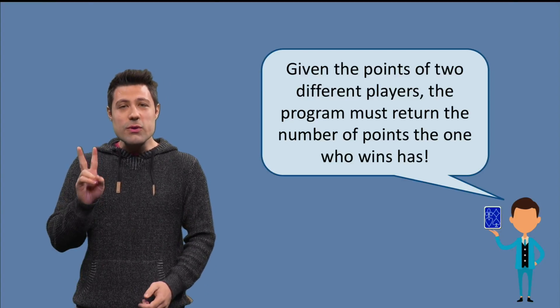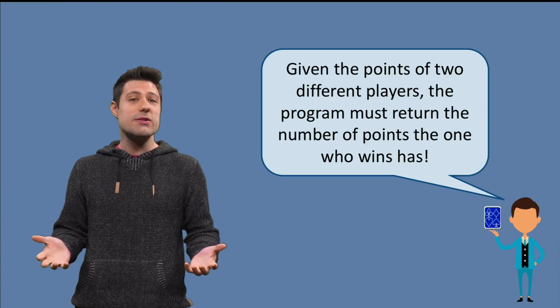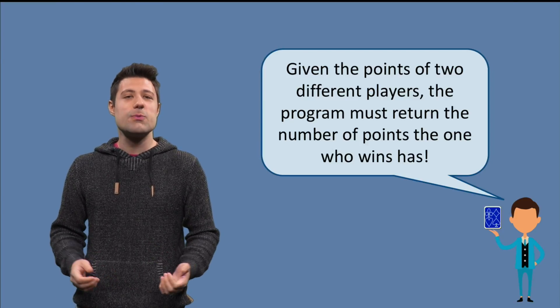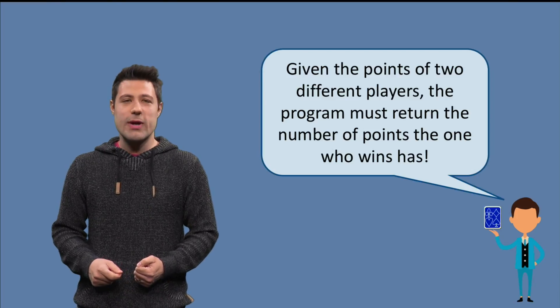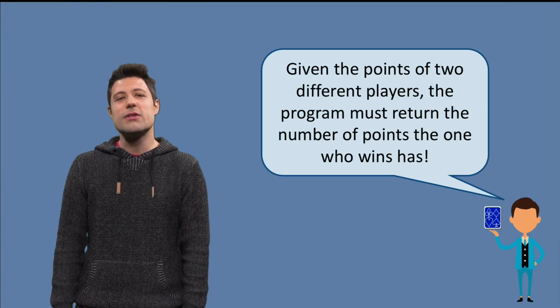So, given the points of two different players, the program must return the number of points the one who wins has. If a player has more than 21 points, she cannot win. If both players have more than 21 points, then the program must return zero.